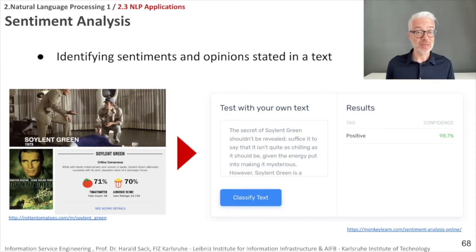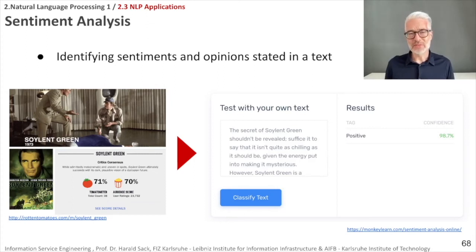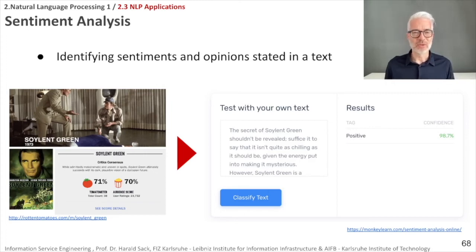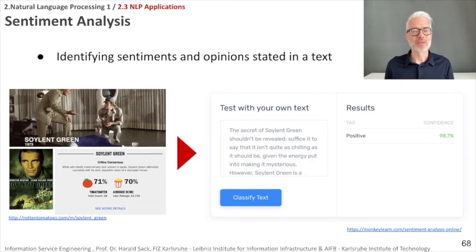Another important application in natural language processing is sentiment analysis, where you try to identify the sentiments or opinions stated in a text — simply to find out whether it is positive, negative, or neutral. You can also define more subtle or sophisticated categories, such as detecting hate speech. One example is analyzing movie reviews to see whether the sentiment analyzer's result matches the scores that people have voted for a movie on the positive or negative side.